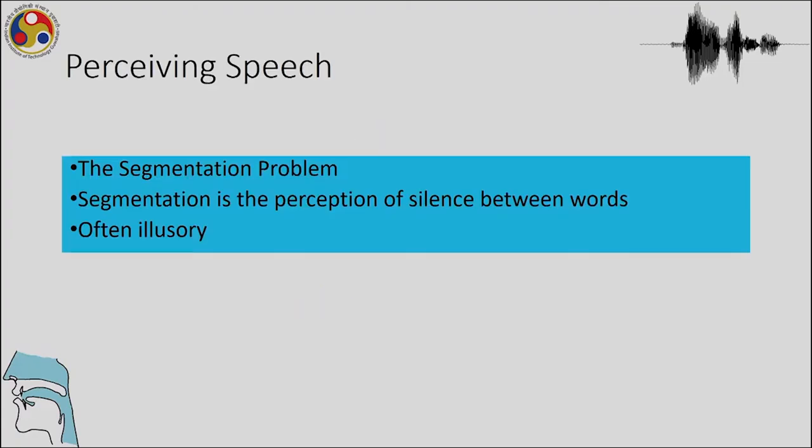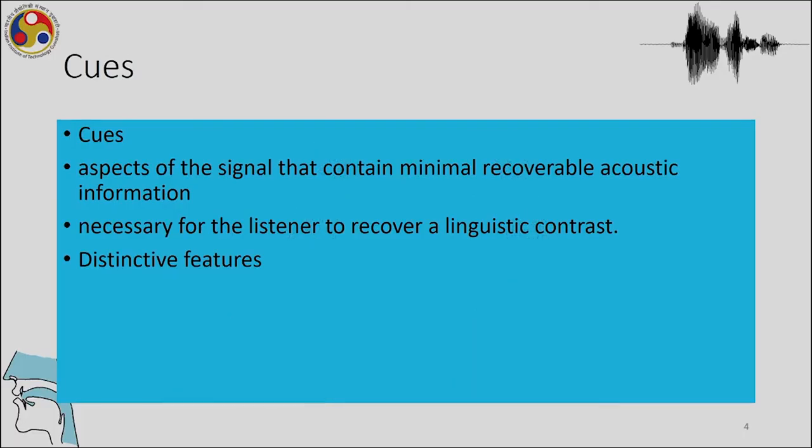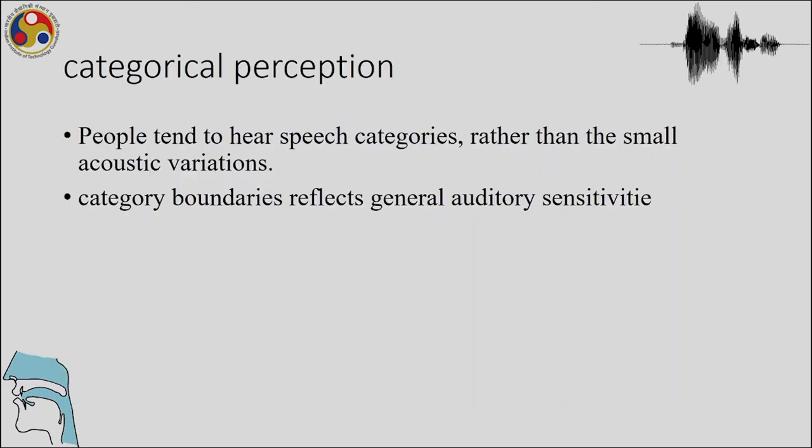I am continuing with unit 4, that is speech perception. In the last class we talked quite a bit about perceiving speech and the segmentation problem — that segmentation is the perception of silence between words — and how we use cues: aspects of the signal that contain minimal recoverable acoustic information necessary for the listener to recover a contrast.